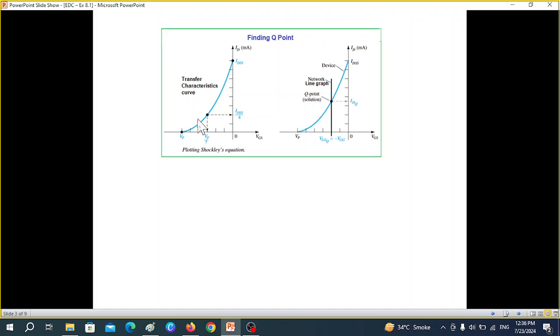And we have learned earlier how to plot or how to find the Q point. First of all using the Shockley's equation we can plot a transfer characteristics. This is dependent on the transistor and then we can also plot this line vertical line which is equal to the gate voltage and this is dependent on the network. So when we draw the network line on the transfer characteristic wherever it touches that point is known as the Q point. So this we have discussed in detail in chapter number 7.